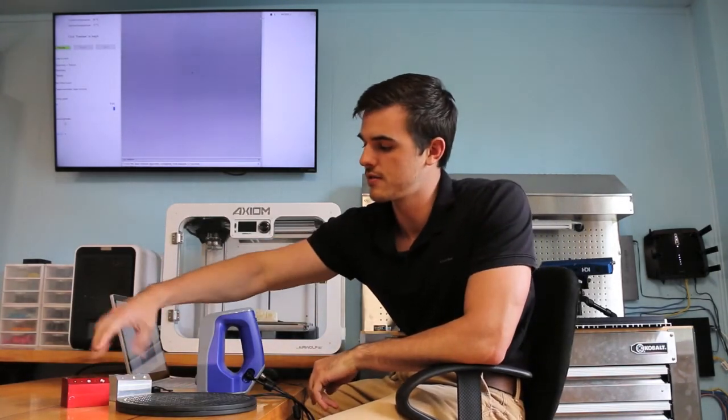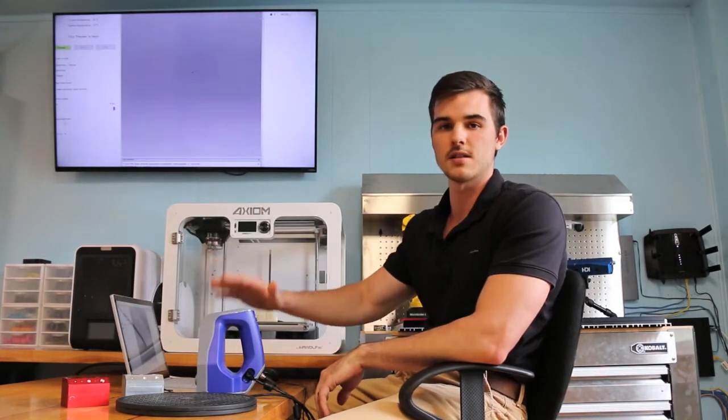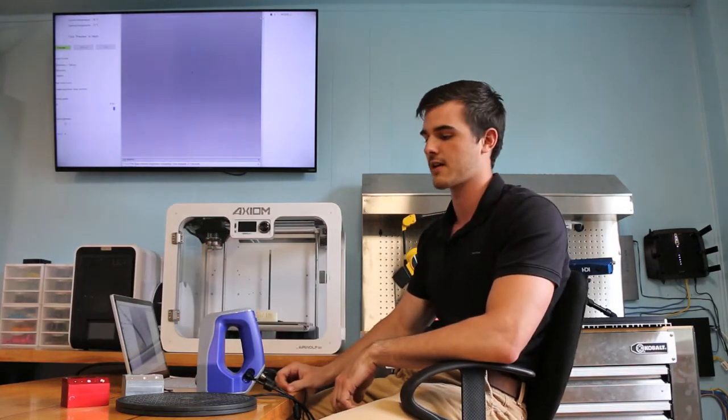So we're going to be comparing these two parts. We're going to call this Model One and this one over here Model Two. We're using the Spacefire, which is the metrology version of the handheld scanners.